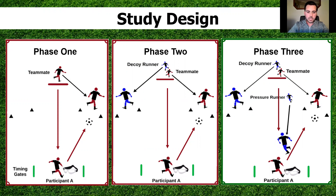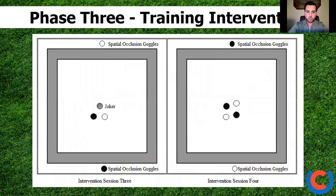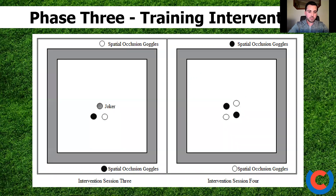In phase three, participants went through four sessions over a two-week period. In session one they did the exact same intervention as phase one participants; in session two, the same as phase two. We changed the style of sessions three and four. In session three, participants wearing the occlusion goggles were on the outside of an 11×11 metre grid. Within that was a 10×10 metre grid with three players — a teammate for each outside participant, a joker who acted as a teammate for the team in possession — creating a two-on-one in the centre and a three-on-two on the outside.